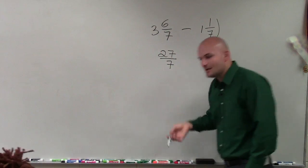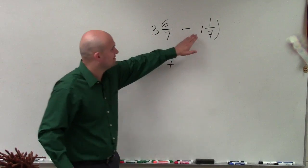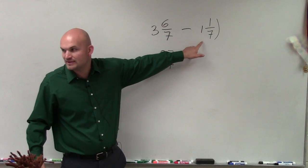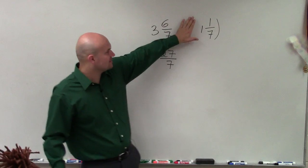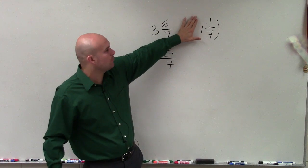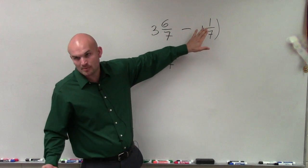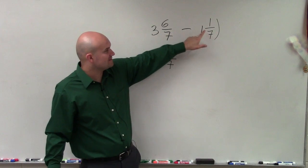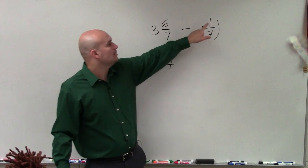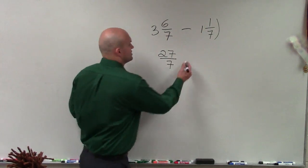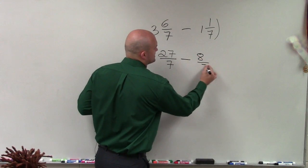And when you're doing mixed numbers, do not attach that negative sign with it. Because basically what we're doing is, how can we rewrite 1 and 1 seventh as an improper fraction? So to do that, we do 7 times 1, plus 1, which is 8. So that's going to be minus 8 sevenths.